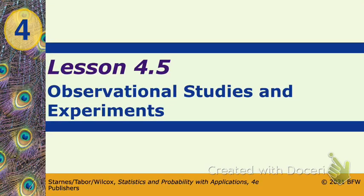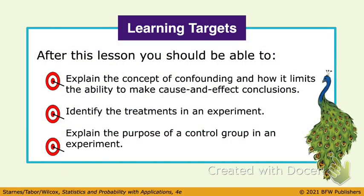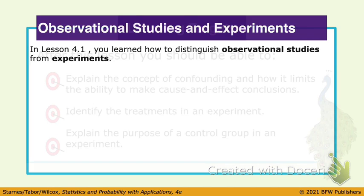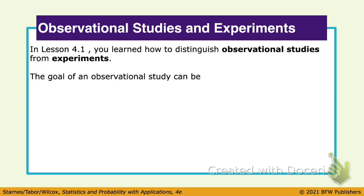So 4.5 is observational studies and experiments. We started this before the break by watching that video about the power punch, doing that strength game. We talked about observational studies versus experiments. How do you know if something is an observational study versus if it's an experiment?